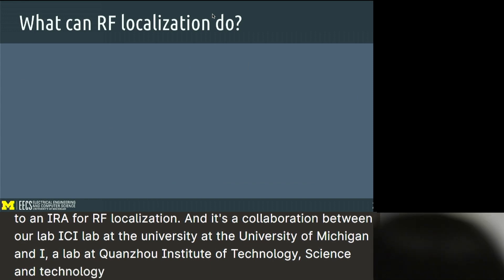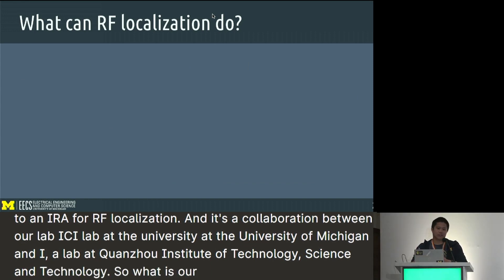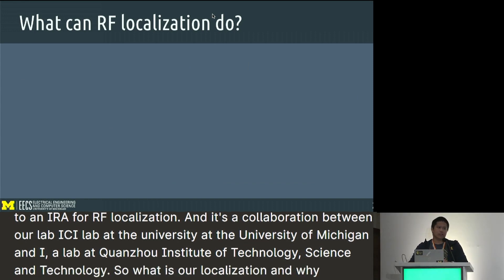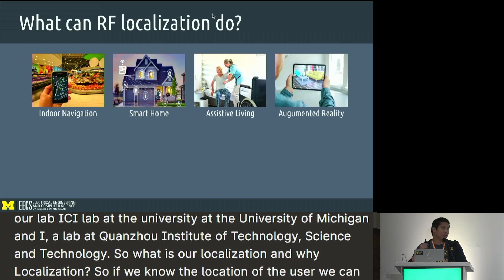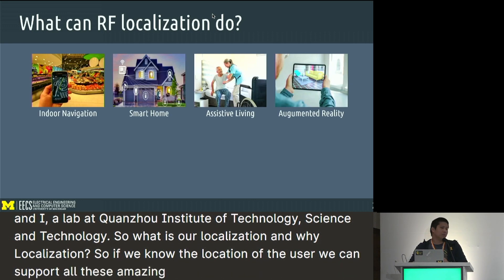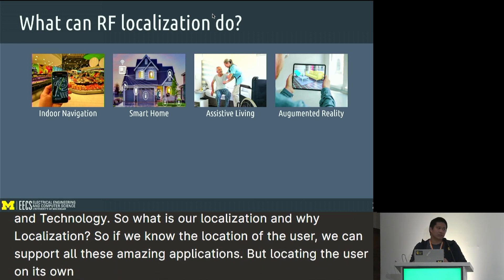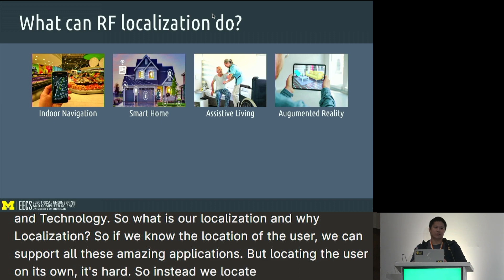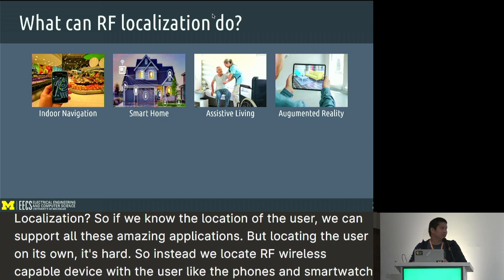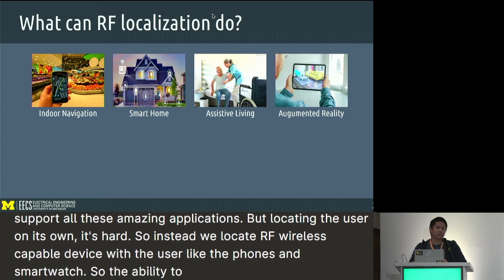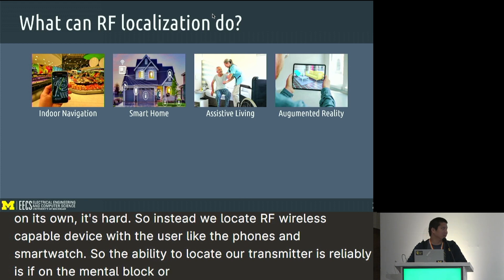So what is RF localization and why localization? If we know the location of the user, we can support all these amazing applications. But locating the user on its own is hard, so instead we locate the RF wireless-capable device with the user, like their phones and smartwatch. The ability to locate RF transmitters reliably is a fundamental block for these ubiquitous systems.